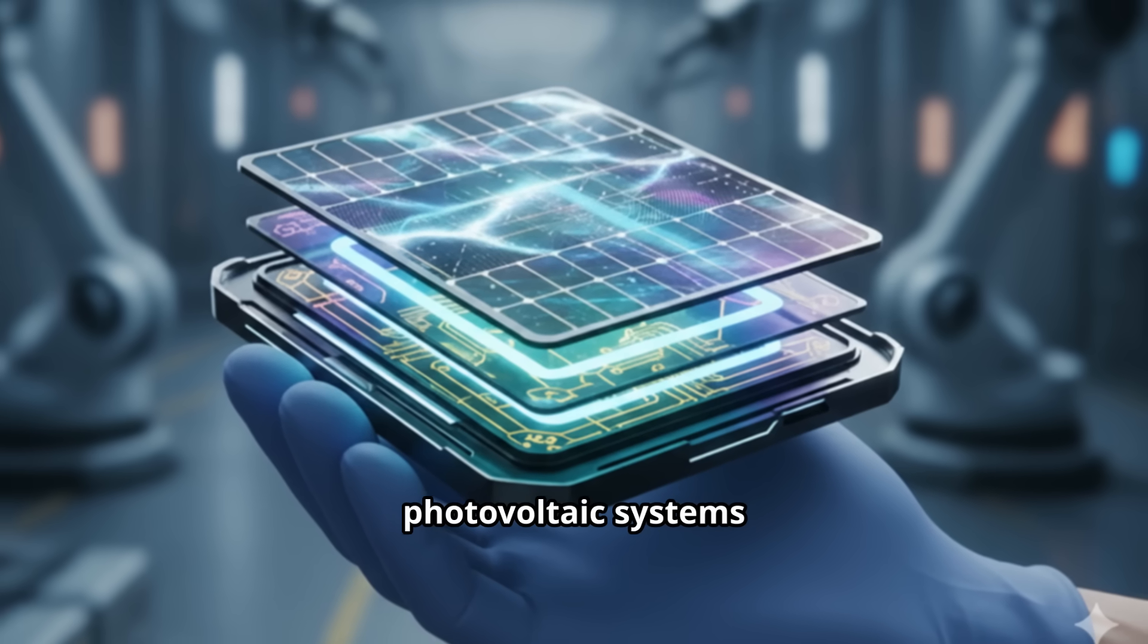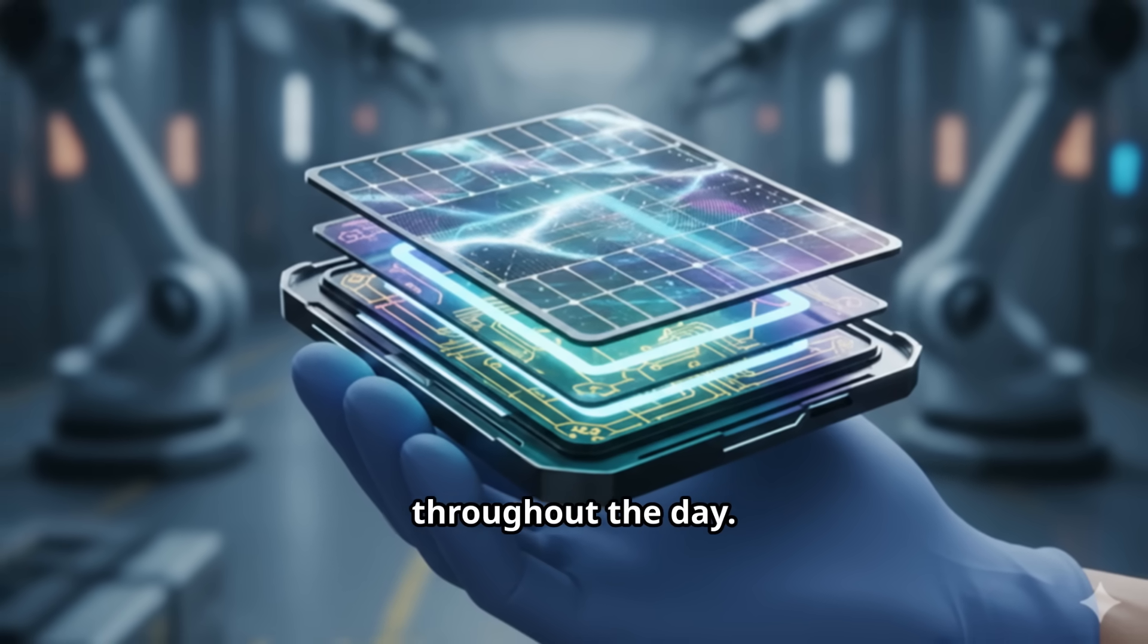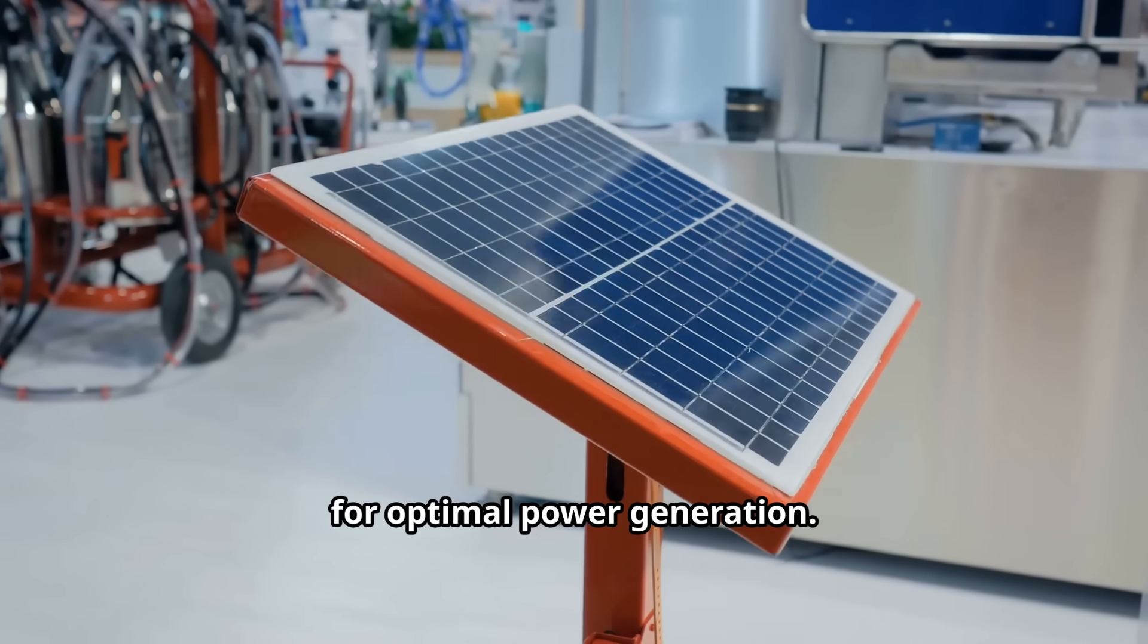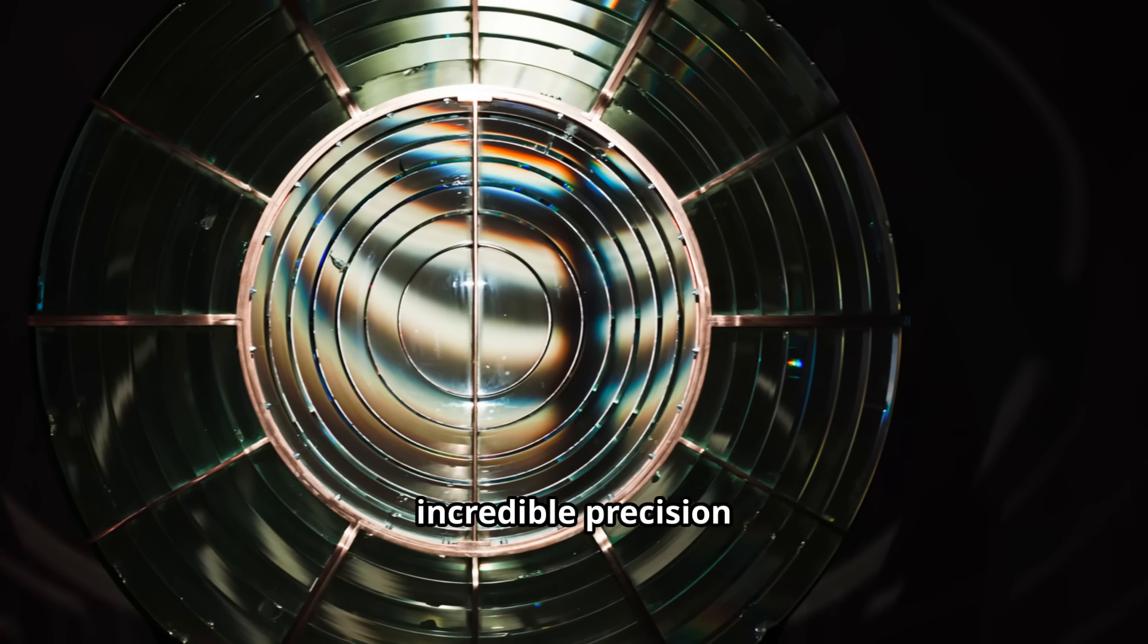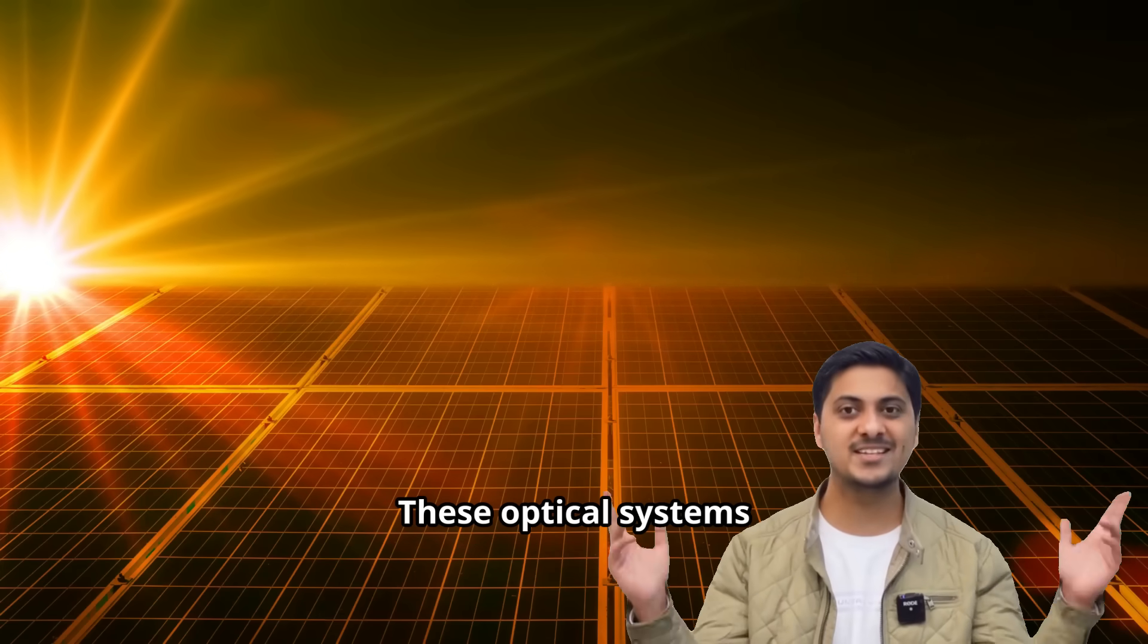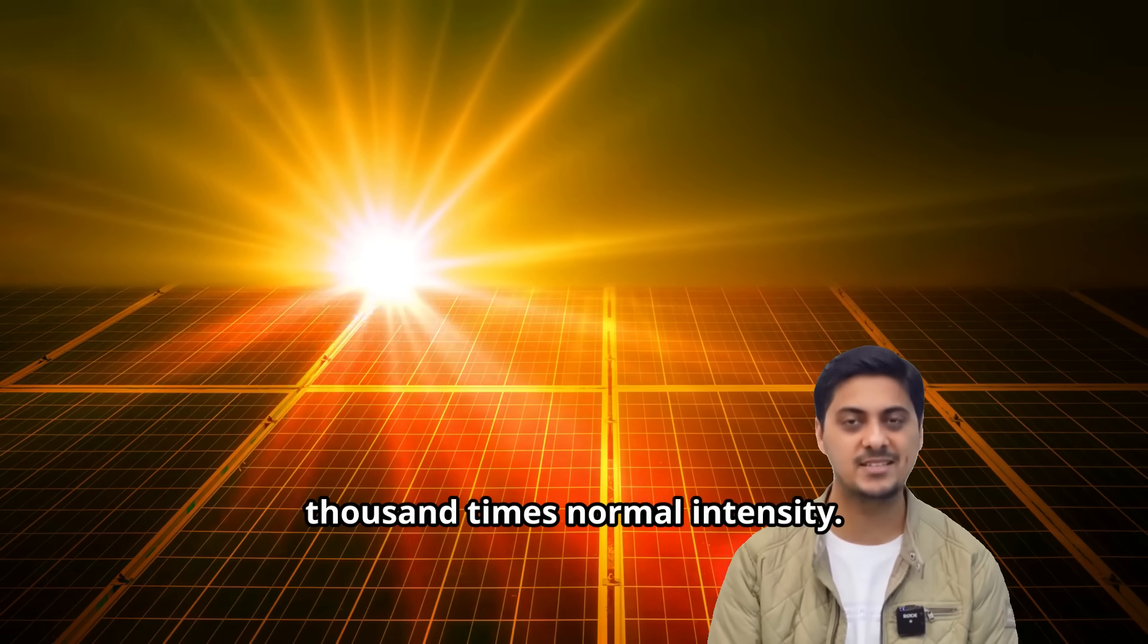On Earth, concentrated photovoltaic systems require precise tracking mechanisms to follow the sun throughout the day. Two-axis tracking systems ensure maximum sunlight concentration for optimal power generation. Fresnel lenses focus sunlight with incredible precision onto the small cell surface. These optical systems can concentrate sunlight by 200 to 1000 times normal intensity.